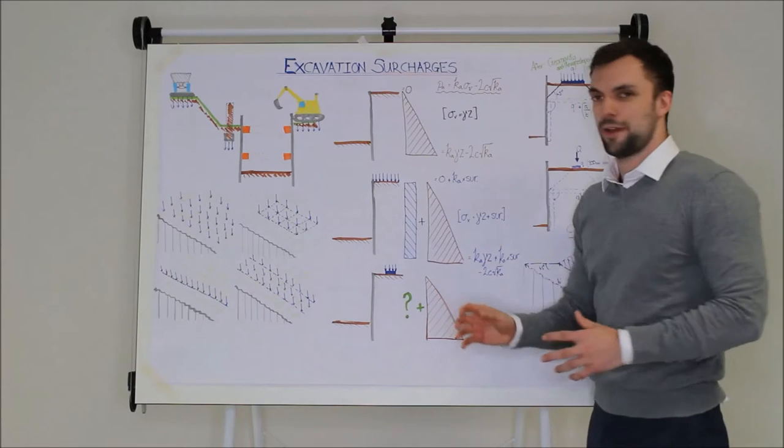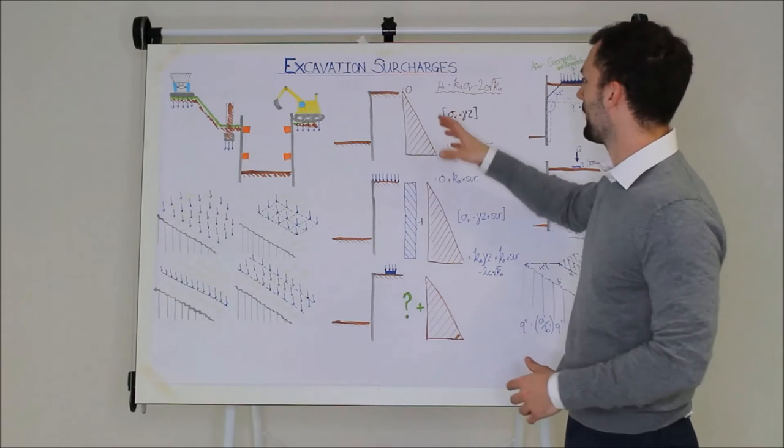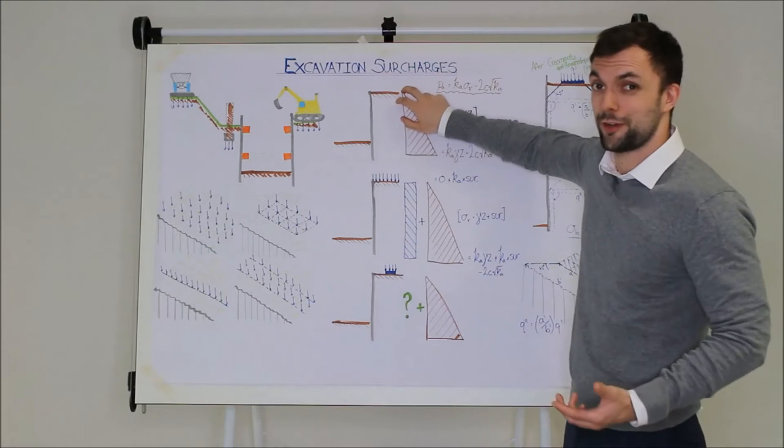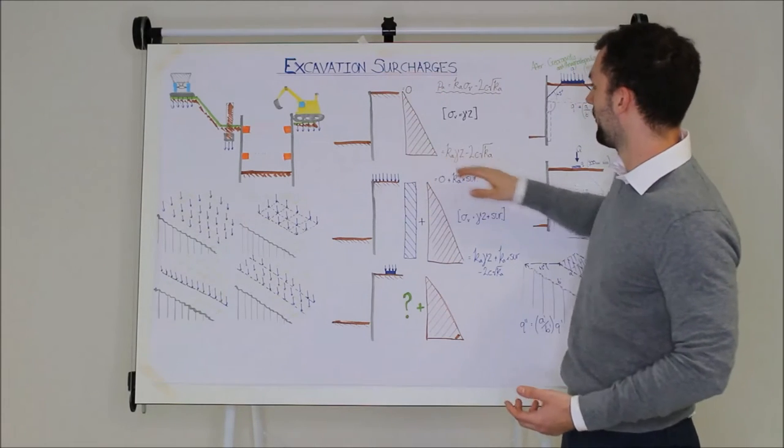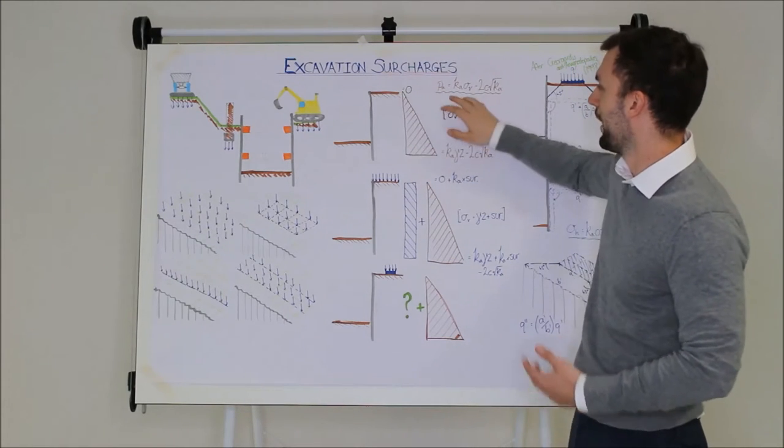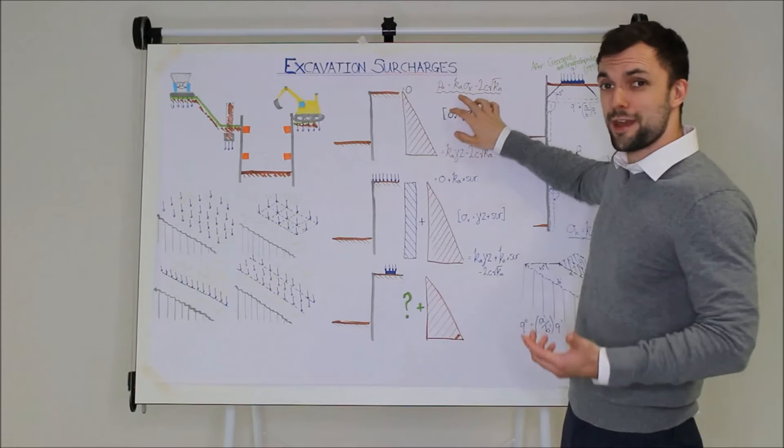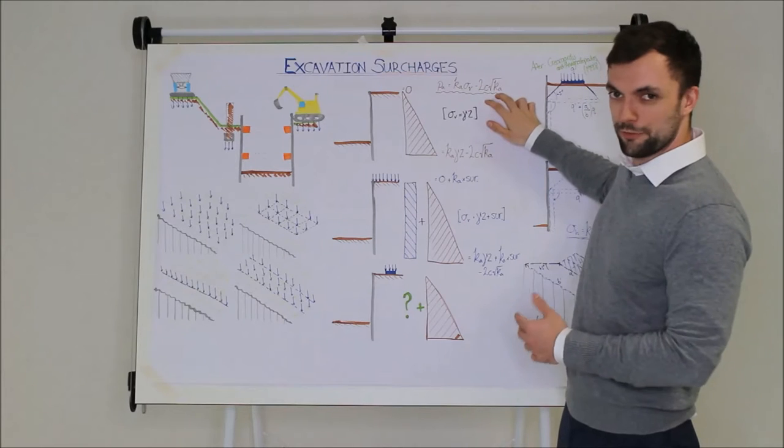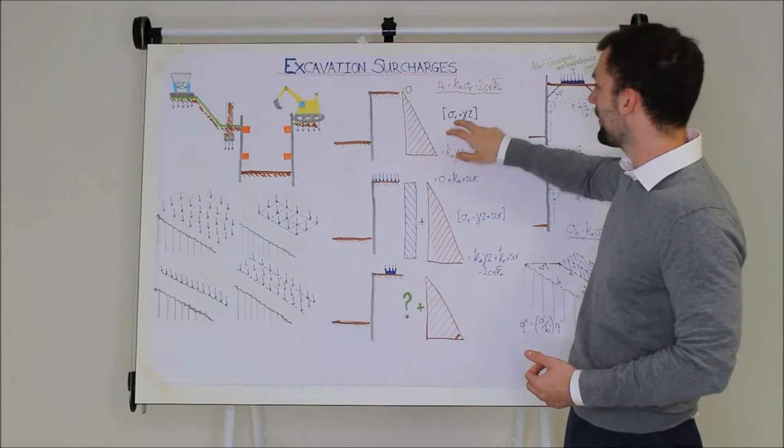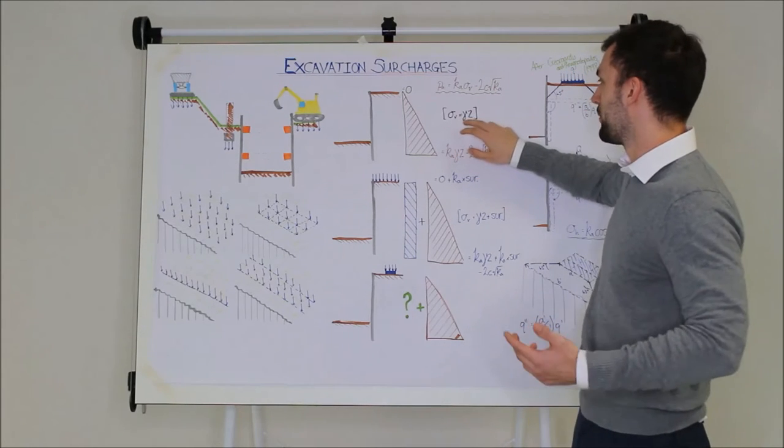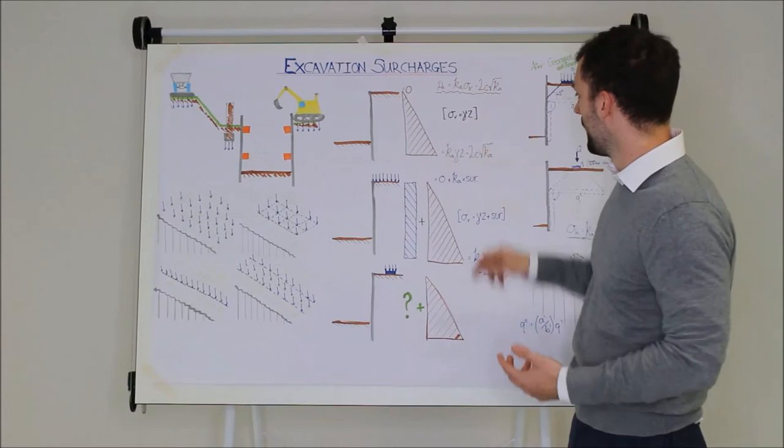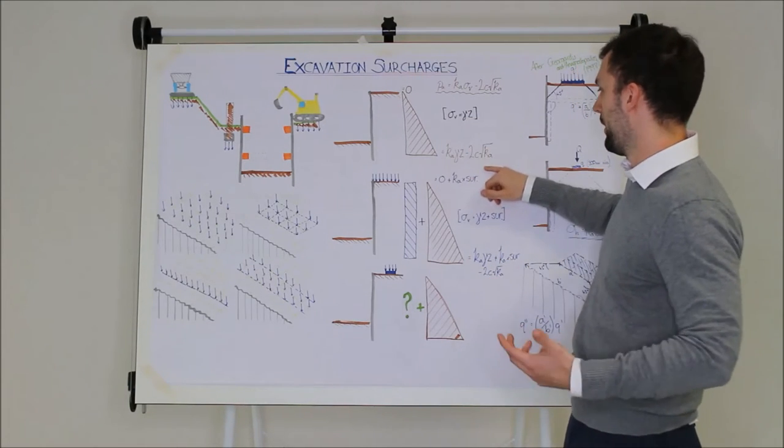Look at a little bit of basic Rankine theory to work out these pressures. Generally speaking, the pressure at ground level is going to be zero and then it increases according to this little equation here where your active pressure is Ka times by your vertical stress, take away a little bit for cohesion. In this case, the vertical stress is equal to the density of the ground times by the depth of ground, and so you end up with this pressure at the bottom.